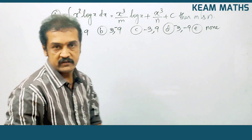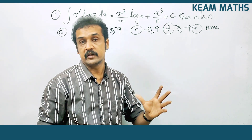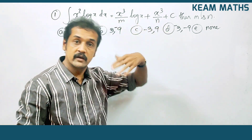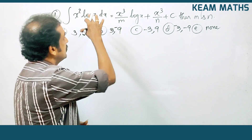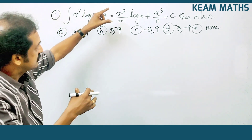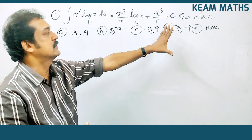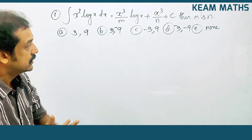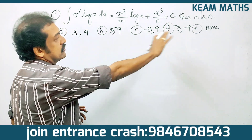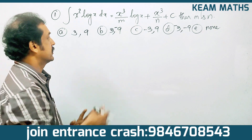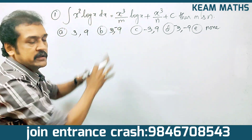Integral x² log x dx. This type is very important. The result is of the form: integral x³ by m into log x plus x³ by n plus c, where m and n are constants.